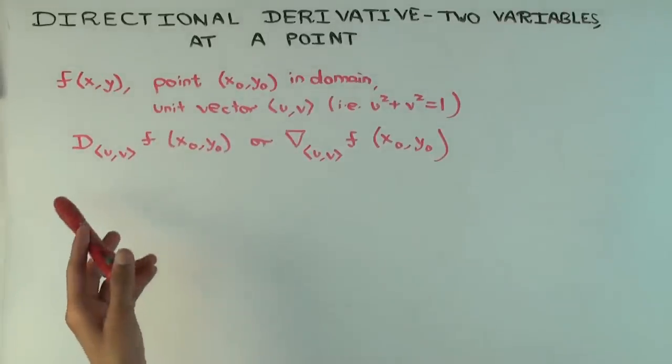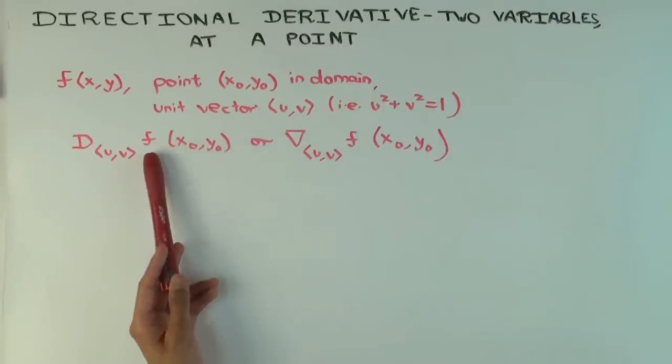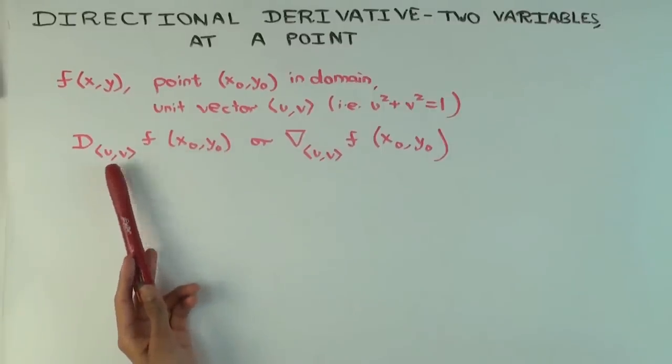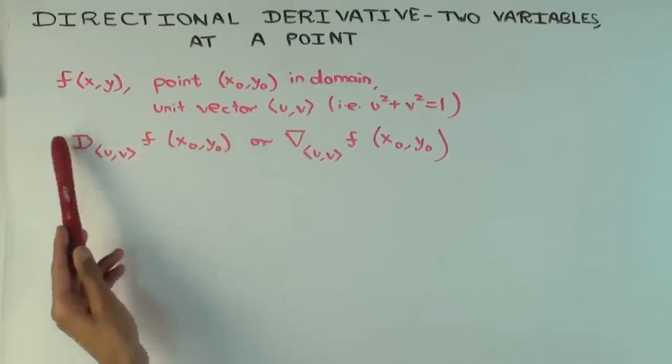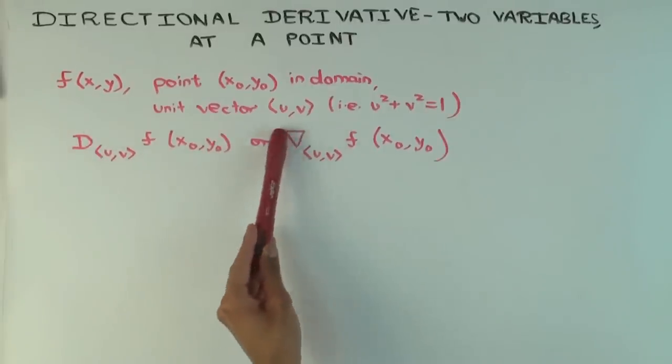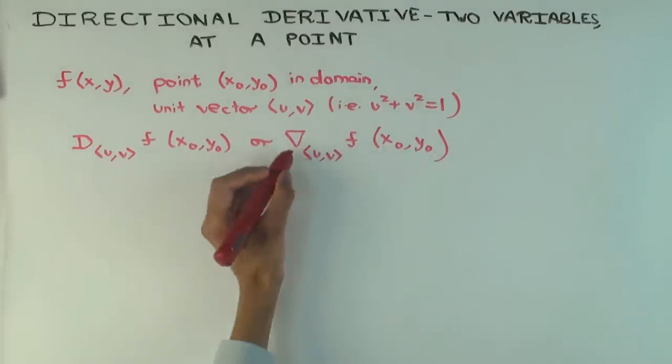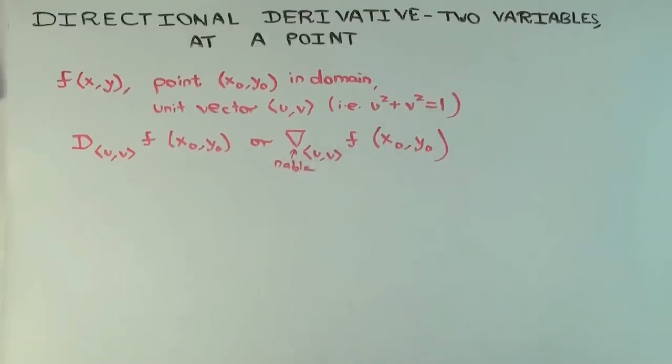And now I want to define the directional derivative of f in the direction of the vector uv at the point x₀ y₀. It's usually denoted like this with a D. Sometimes it's also denoted with this symbol called nabla. That's used in slightly different contexts as well.